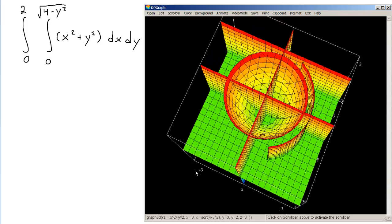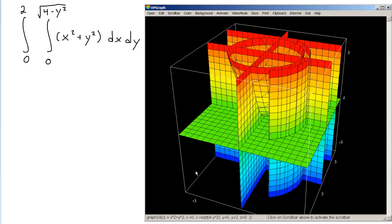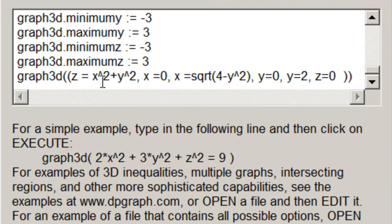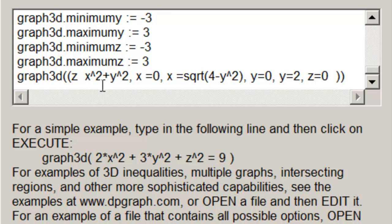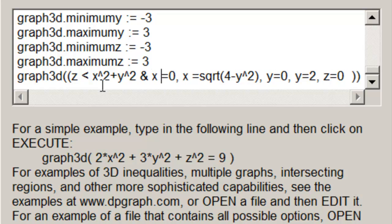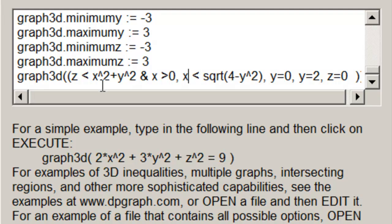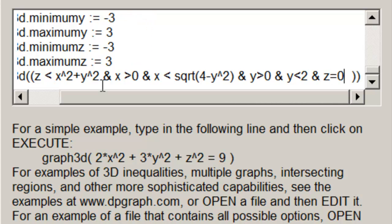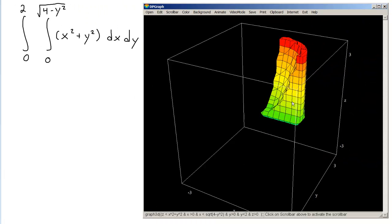So let's use some ampersands to take the union of this set. Now remember we want z less than this, we want under this surface, and x greater than 0, x less than square root, that's an ampersand. Take the union of that with y greater than 0, ampersand, y less than 2, ampersand, and we'll do z greater than 0. Okay, that's the chunk that we're looking for.